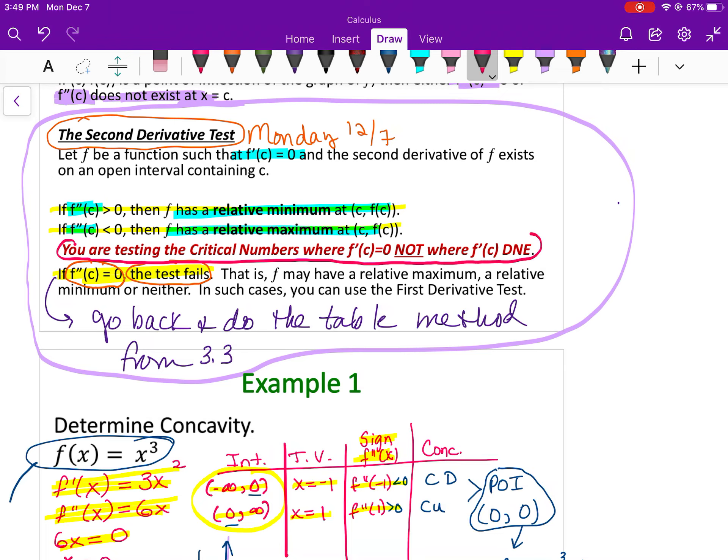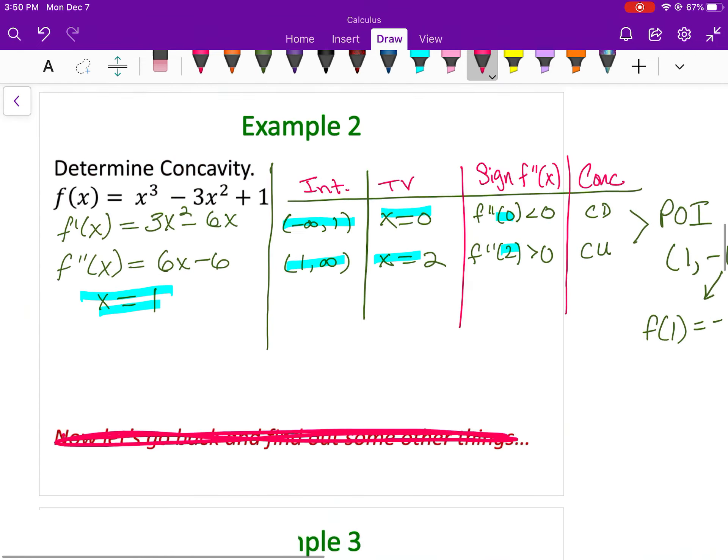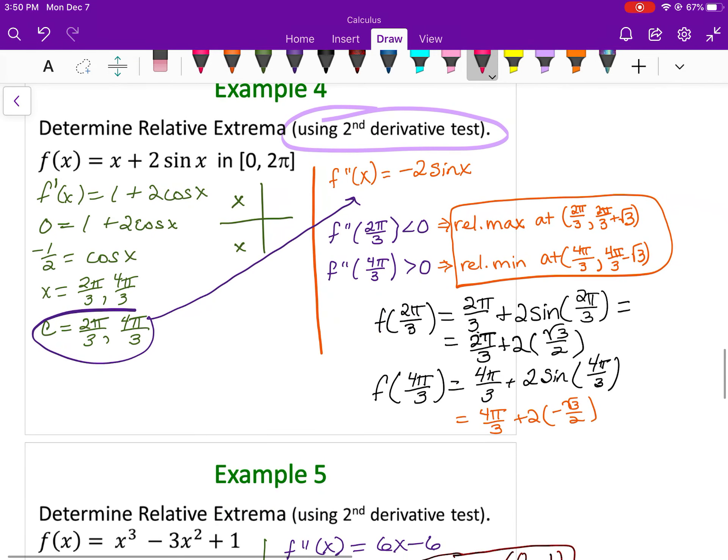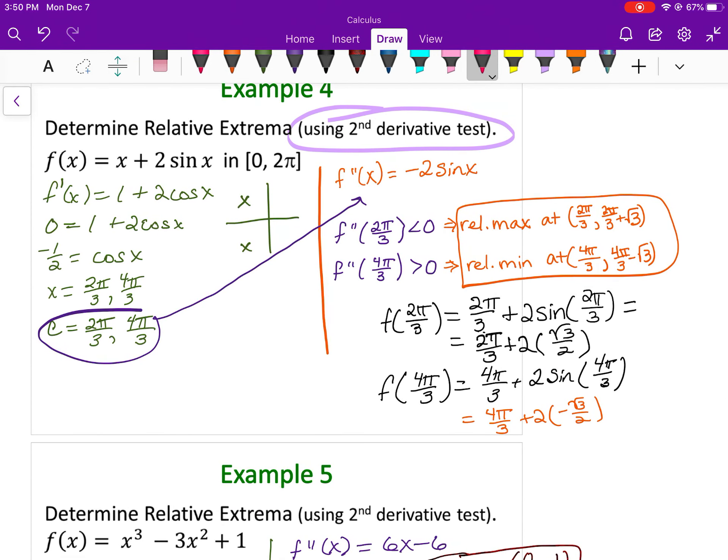Let me go back now to Example 4. We found our first derivative. These represent our critical numbers of the first derivative. We plug them into the second derivative. When it's less than zero, we have a maximum, and when it's greater, we have a minimum. This work is just helping us find the y values right here.